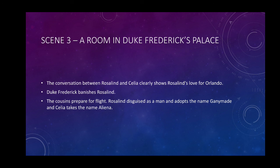Rosalind says she is innocent, but Duke Frederick never listens and simply states that she has to flee the court. Because the decision was already taken, both sisters decide to flee the court as soon as possible. Being young and beautiful girls, they decide that Rosalind will be disguised as a man and adopt the name Ganymede, while Celia takes the name Eliana. They both decide to go to the forest of Arden and also decide to take the clown Touchstone with them.